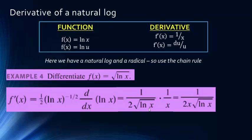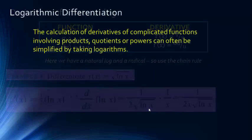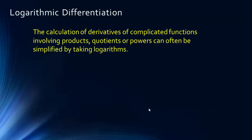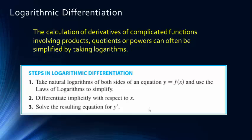Those are the basic rules for derivatives of logs, natural logs, and different-base logs. We're also going to look at logarithmic differentiation. When a function has products, quotients, and powers, it can be very difficult to find the derivative directly. Logarithmic differentiation works because logs convert products and quotients into sums and differences, making each piece easier to differentiate. The three steps are: take the natural log of both sides, use logarithm laws to simplify, differentiate implicitly, then solve for y prime.